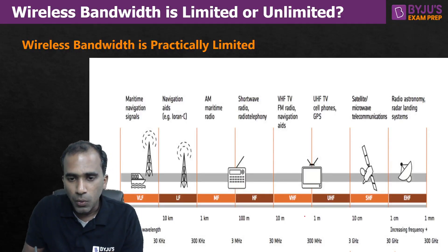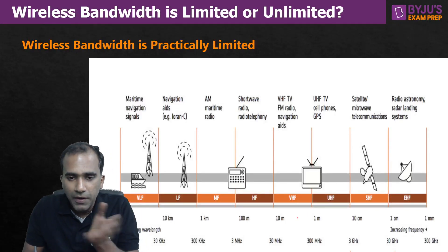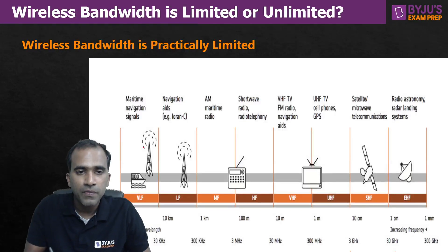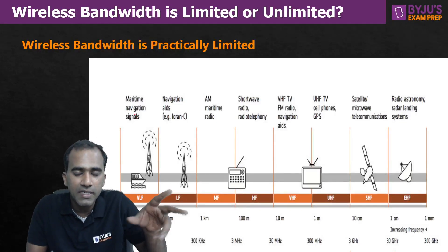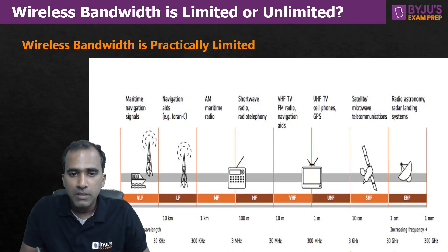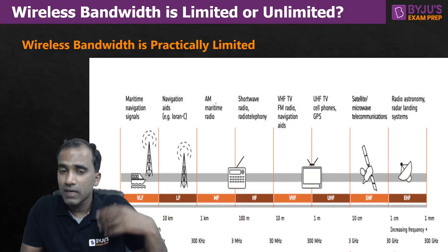Let me show you the frequencies we use practically. 3 kHz to 30 kHz — we call them very low frequencies and we use them for maritime navigation, meaning ship-to-ship communication. Similarly, low frequencies are used for some kind of communication, and medium frequencies are used for AM radio and some other purposes.